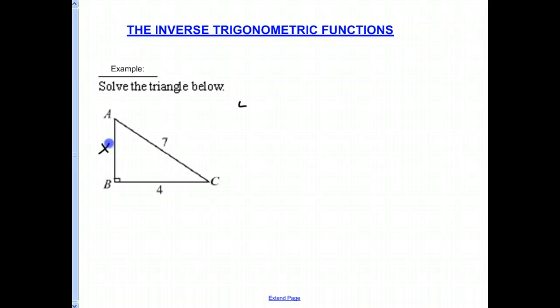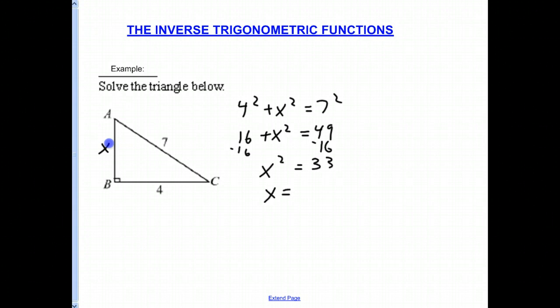We could certainly say 4 squared plus x squared equals 7 squared. 16 plus x squared equals 49. Subtract 16. And we get x squared is equal to 33. And x is the square root of 33. So that is nothing new there.